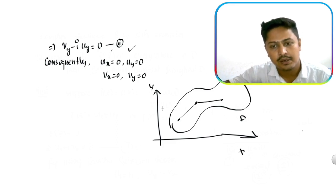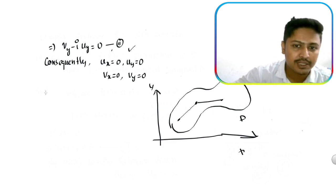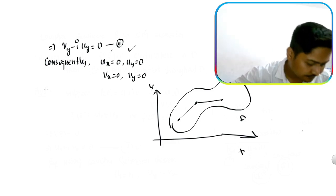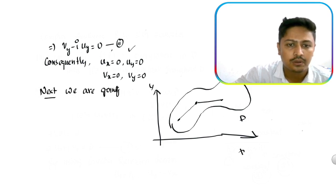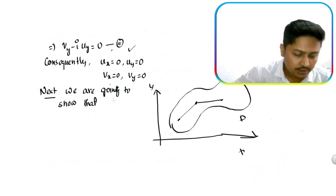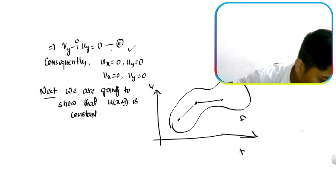And from that particular result, we are going to show that f is a constant function. So next, the intuition is: first I show that u is constant. We are going to show that u is a constant function. So what do we do in this domain? I will show that.